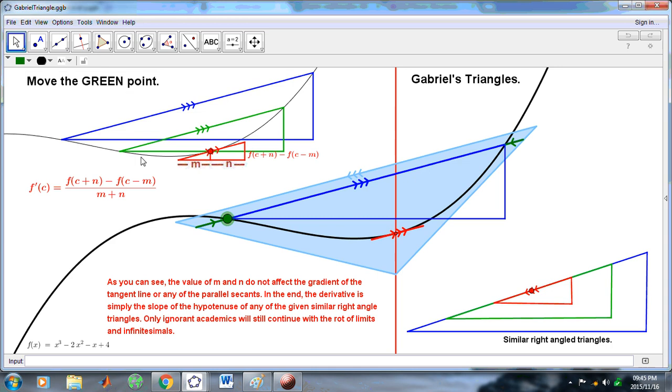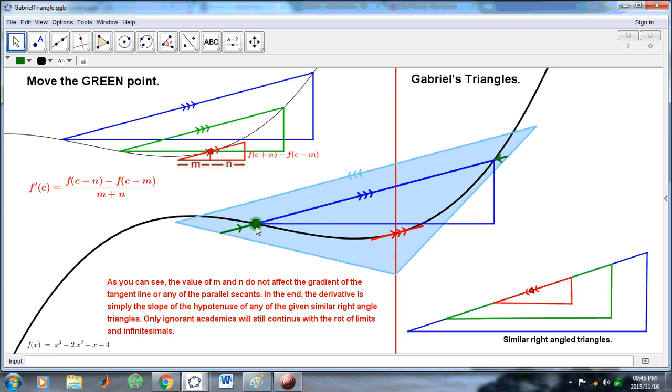This applet was designed for professors of mathematics. As you can see, this is called Gabriel's triangle as a parody to Barrow's triangle. Because Barrow really didn't know what he was talking about. When you move a parallel secant line so that it coincides with a tangent line, then obviously this red tangent line gradient will be the same as the slope of this parallel secant line. And m and n play no role in the gradient of the tangent line. In the new calculus, there are no limits. You're looking at the slope of the tangent line by calculating the slope of a parallel secant line. And all these triangles here are similar triangles.